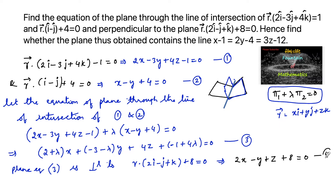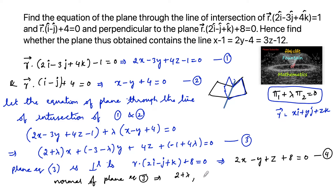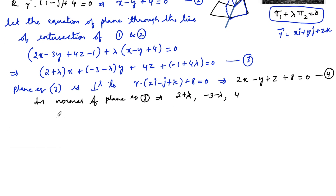Since equation 3 and equation 4 are perpendicular planes, their normals are also perpendicular. The normal direction ratios of plane equation 3 are (2 + λ, -3 - λ, 4), and the direction ratios of the normal of plane equation 4 are (2, -1, 1).